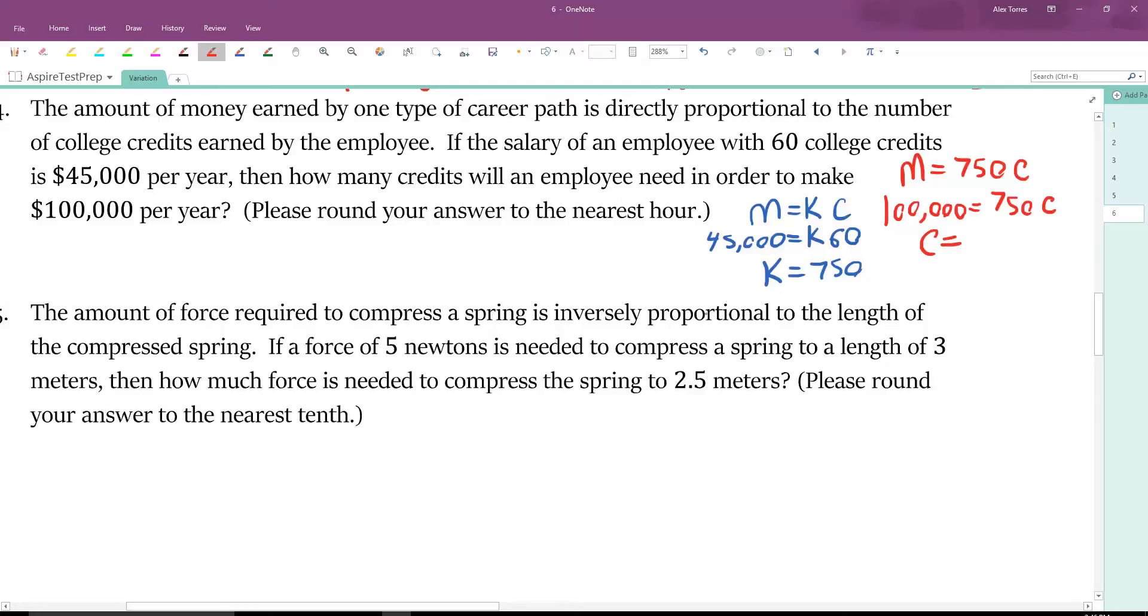How many credits will you need to make $100,000? We can plug in $100,000. Divide by $750 on both sides. C equals $100,000 divided by $750, and the answer is 133.3 repeated. Please round to the nearest hour. We need to look at the next number. If it were 5 or greater, we would have rounded this number up. But because it's 4 or less, we're going to keep it the same. The answer that we would have bubbled in here would have been 133.